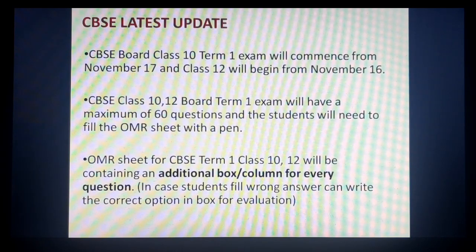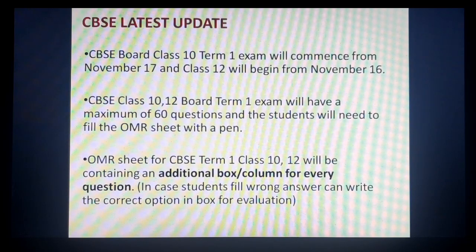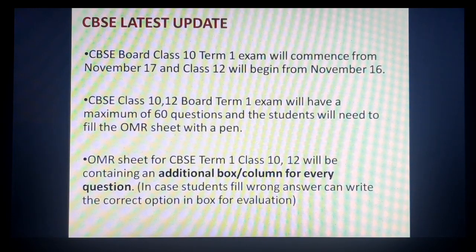Is cheez ko consider karke CBSE ne ek new guideline provide ki hai. Jab hum board ka term one ya term two ka exam dene jayenge, toh OMR sheet mein ek additional box — an additional column — har ek question ke liye hoga. OMR sheet mein A, B, C, D ka option toh hoga hi, but saath mein ek additional box bhi diya hoga. In case aapne koi wrong answer fill kar diya, for example question number 3 mein aapne C fill kiya tha but correct answer A tha, toh aapko usi third question ke box mein simply A likh do — that option will be considered for evaluation.